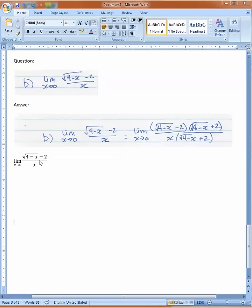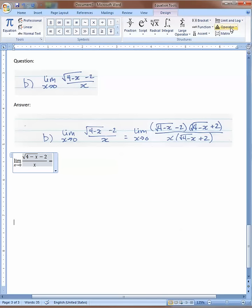Here's the next step in that limit example. If you lose your equation editor, it's under Design over here. Here's the limit as x goes to zero, over into the box.